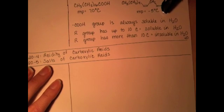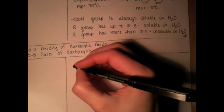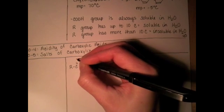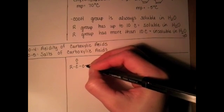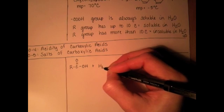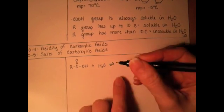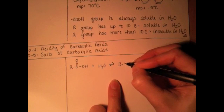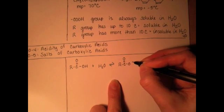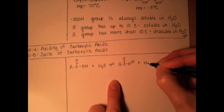First of all, recall that carboxylic acids are weak acids, which means that when they are put into water, they will react with water in equilibrium to produce a deprotonated conjugate base and hydronium ion.